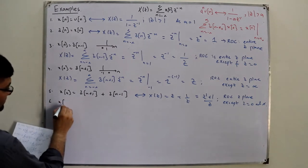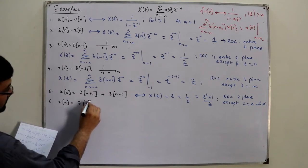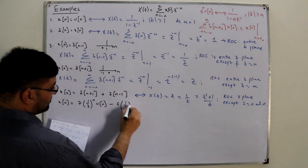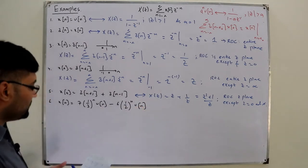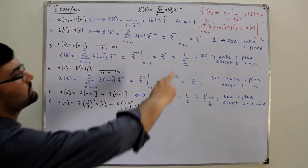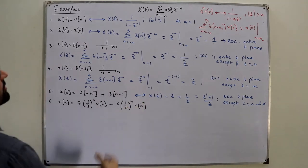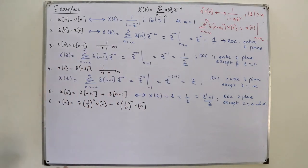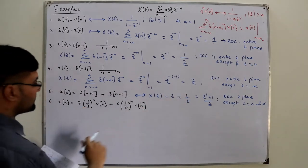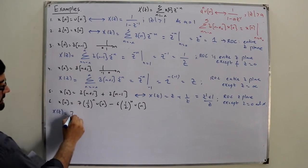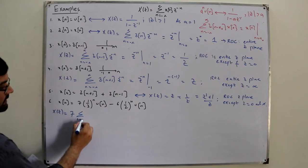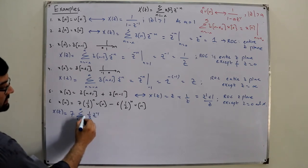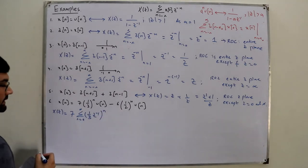Example number 6 — from the book: x(n) = 7 · (1/3)^n · u(n) minus 6 · (1/2)^n · u(n). To find the Z-transform, I take 7 outside and write the summation from 0 to infinity of (1/3 · z⁻¹)^n, and separately −6 times the summation from 0 to infinity of (1/2 · z⁻¹)^n.